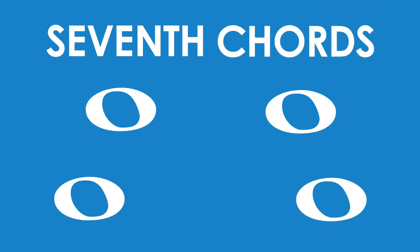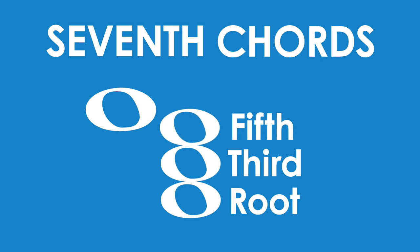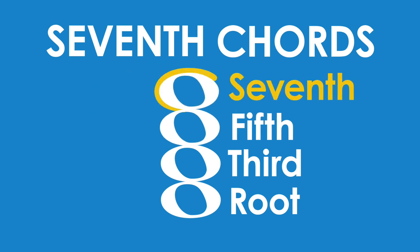Seventh chords are a four-note chord. Just like triads, they have the root, third, and fifth of the chord, but unlike triads, they add the seventh of the chord.